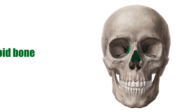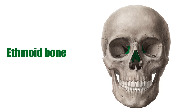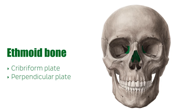The ethmoid bone consists of a horizontal and a vertical plate. It is an unpaired bone situated in the ethmoid notch. Parts of the ethmoid bone include a cribriform plate, a perpendicular plate, the crista galli, and the ethmoid labyrinth.